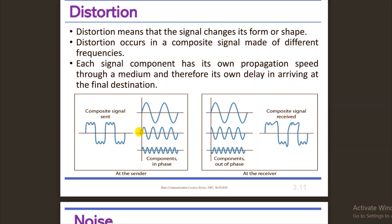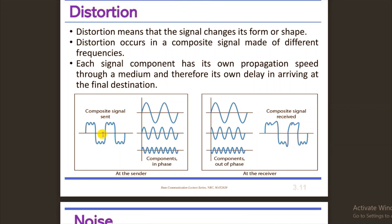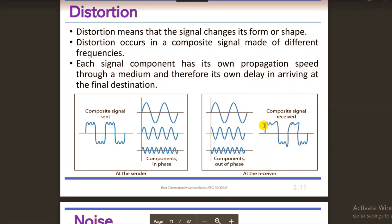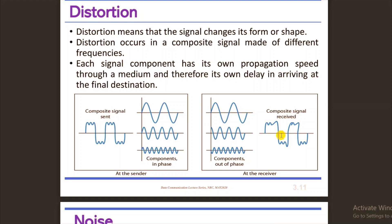This composite signal is composed of three sine waves with different phase shifts — some data is at 90 degrees, some at 45 degrees, some at 0 degrees. This is the same composite signal. If the signal components travel at different speeds through the medium, the received signal will be distorted from the original.